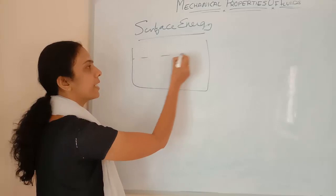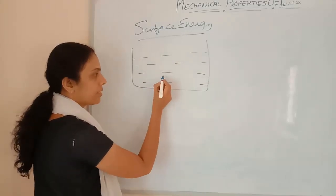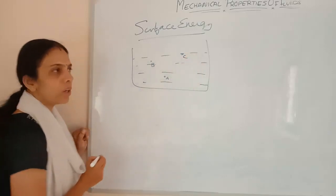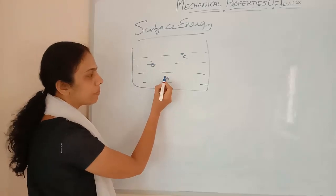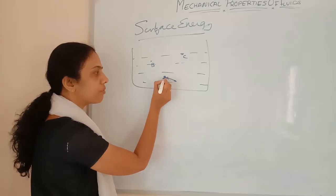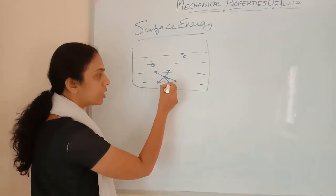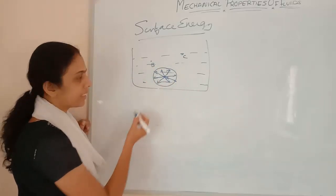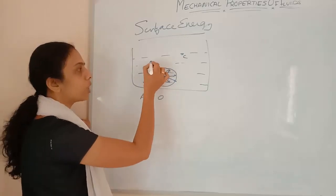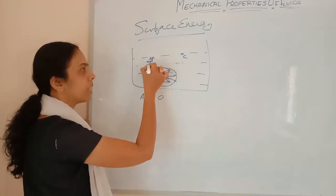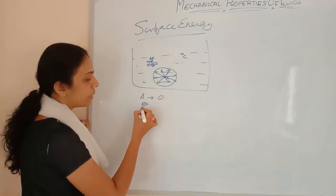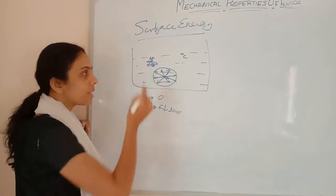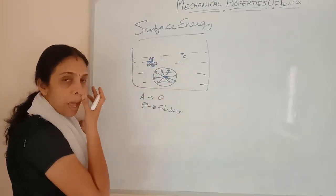I am considering a fluid inside a beaker. I am considering three points: one here at A, another at B, and another just on the surface at C. For molecule A, it will be having forces in all directions from all other particles near to it, so the net force acting on that molecule at A will be equal to zero. But at B, the number of particles above are less while more particles are below, so the net force is acting downwards — though there is some upward force too since some molecules are above.